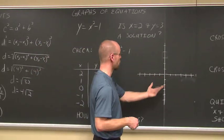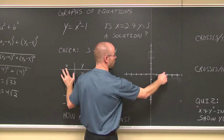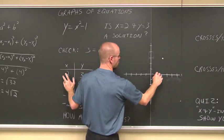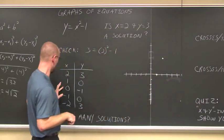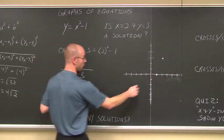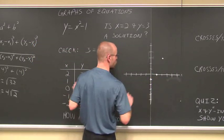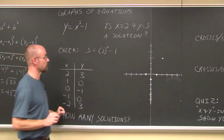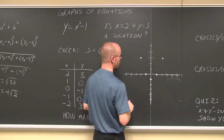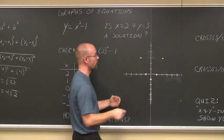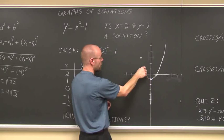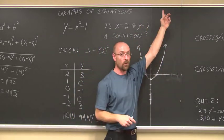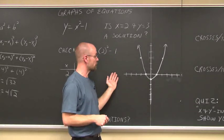Let's start plotting those points: (2, 3), (1, 0), (0, -1) — right on the y-axis since x = 0, (-1, 0), and (-2, 3). Connecting these, we see the parabolic shape. The arrows indicate it continues forever: as x gets larger, y also gets larger, and as x goes into the negative direction, y also gets larger.